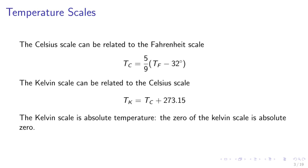The Celsius scale can be related to the Fahrenheit scale as Tc equals 5 ninths times Tf minus 32. The Kelvin scale can be related to the Celsius scale, Tk equals Tc plus 273.15. The Kelvin scale measures absolute temperature. The zero of the Kelvin scale is absolute zero.